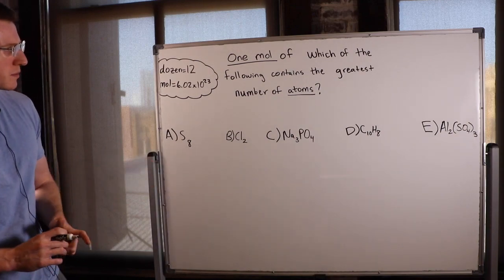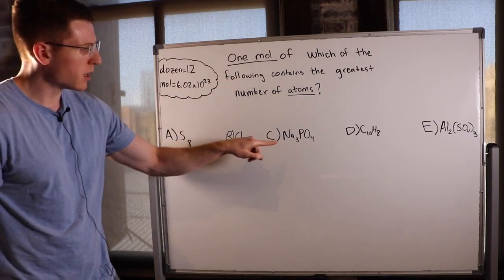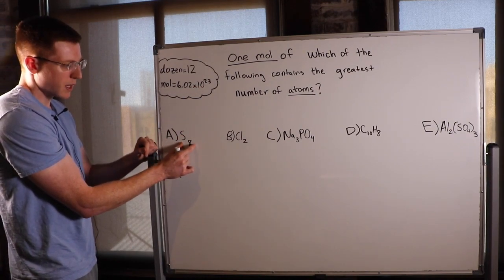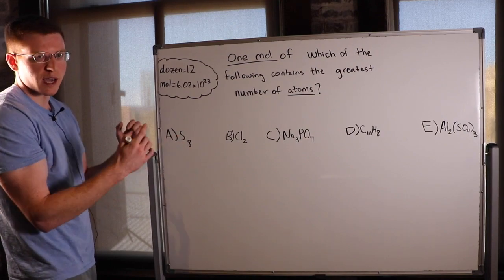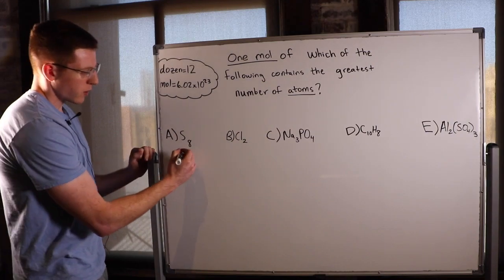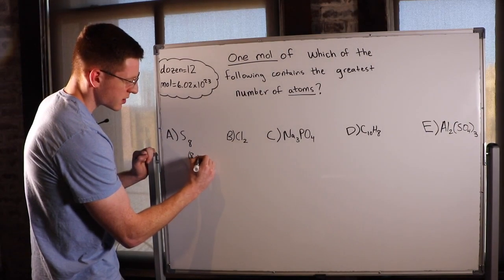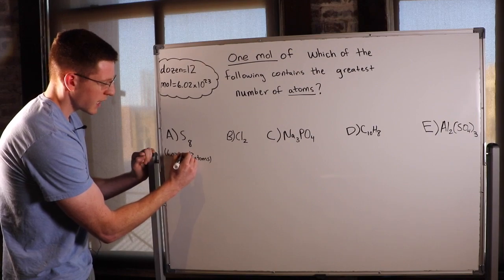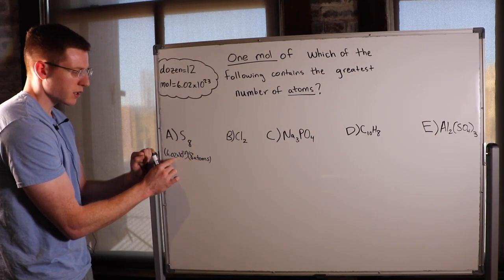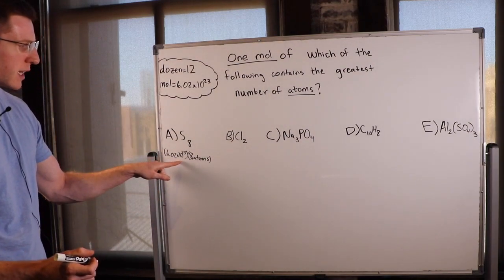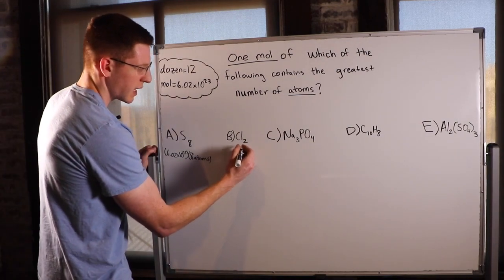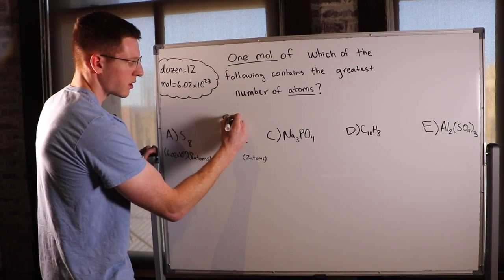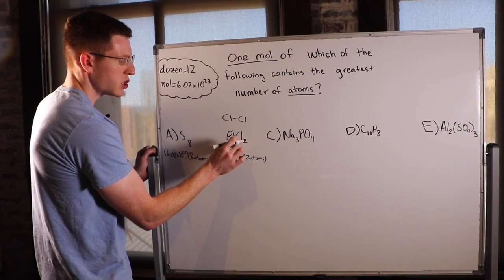Back to the problem. One mole of which of the following — so we have 6.02 times 10 to the 23rd of each of these options. What does one individual molecule of S8 have? Eight sulfur atoms bonded together — so eight atoms per one individual S8. But we know we have 6.02 times 10 to the 23rd of those. If we multiply these together, we get the total number of atoms in one mole of S8. We can do this for each option. Cl2 has two atoms per molecule — there are two atoms per each individual Cl2.